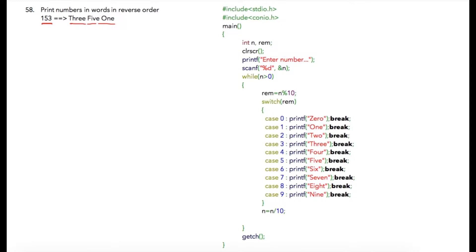Earlier we have seen how to print reverse of a number, so we are going to use that same logic over here. Here I am asking user to enter the value n, and while n is greater than 0, we are going to divide that number by 10 so we get one digit at a time.